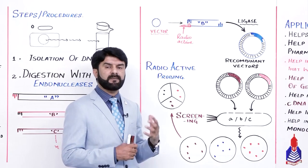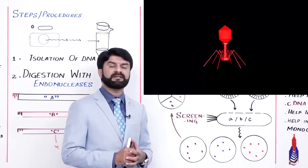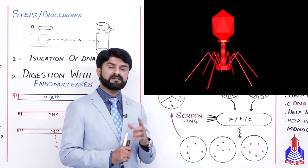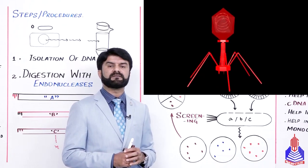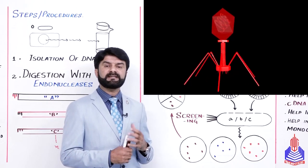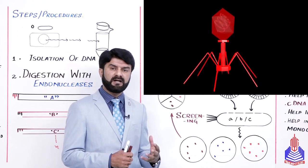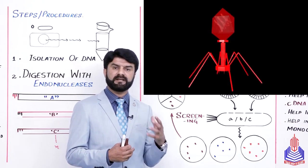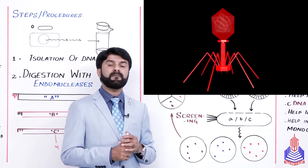اب یہ سارے process کو میں drawing سے نہیں بنا رہا ہوں بلکہ میں آپ لوگوں کے لئے ایک animation بنا رہا ہوں. Look at this animation — we are taking the virus. اگر میں یہ چاہ رہا ہوں کہ virus جا کے bacteria پر attack کرے تو مجھے ایک specific قسم کا virus لینا پڑے گا and that very specific virus is called as bacteriophage. آپ کو یاد ہوگا ہم نے chapter number 5 میں پڑھا تھا — bacteriophage کا مطلب ہوتا ہے کھا لینا.